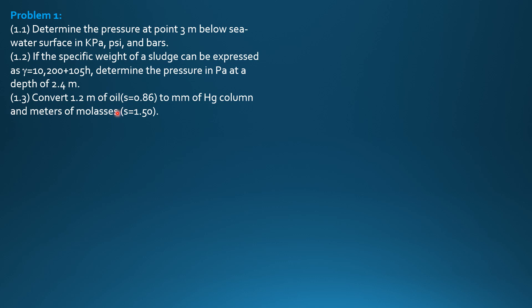Here we go. Determine the pressure at a point 3 meters below the sea water surface in kilopascals, psi, and bars. The formula is: pressure equals specific weight of the liquid times depth. I also recommend viewing the lecture video on pressure at a point and variation of pressure with depth, which I have on YouTube, before proceeding to these examples.